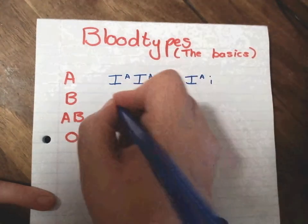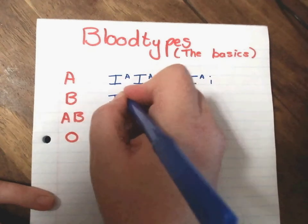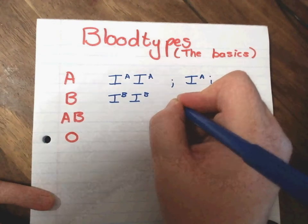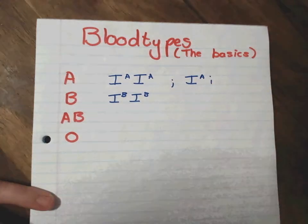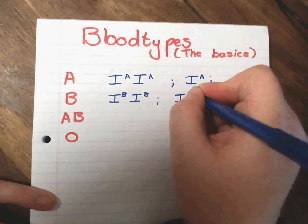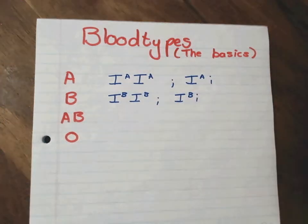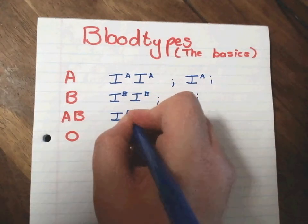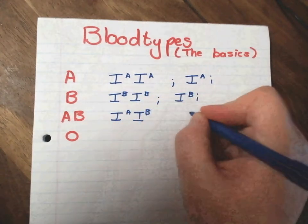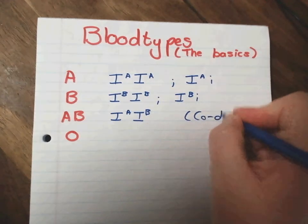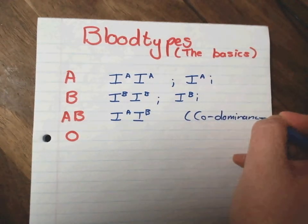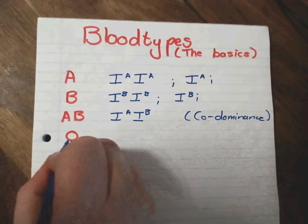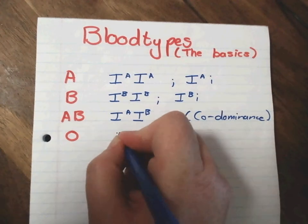Now the same thing with blood type B. So it can either be homozygous dominant or it can be heterozygous. Now the thing has become really interesting here with blood type AB where we will have an A and a B. Remember this is an example of co-dominance because we see both alleles being expressed in the phenotype, and then blood type O will be our homozygous recessive blood type.